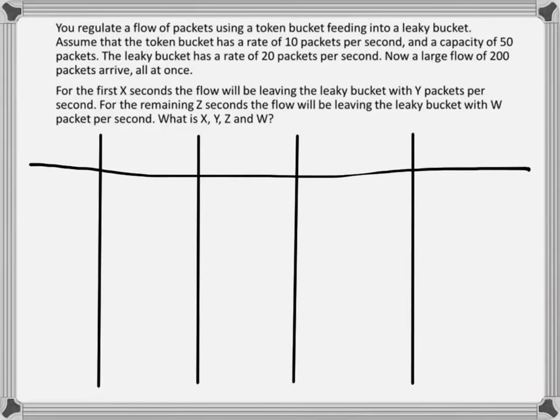In this exercise we are looking at 200 packets arriving all at once. First they fall down to a token bucket and from there they go to a leaky bucket. In the token bucket there are 50 tokens when we start and they are arriving with 10 tokens per second. For the leaky bucket it works with a rate of 20 packets per second.